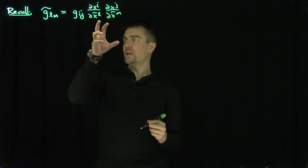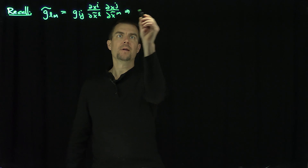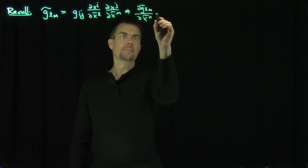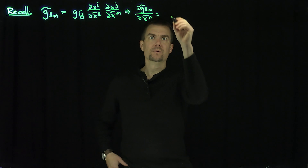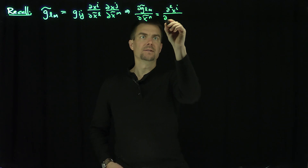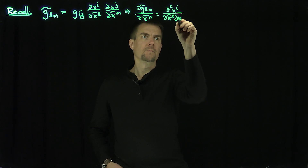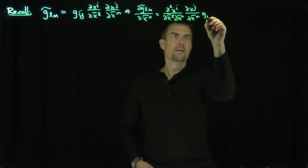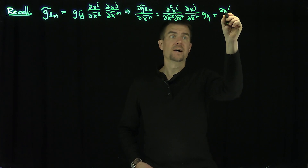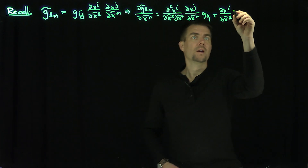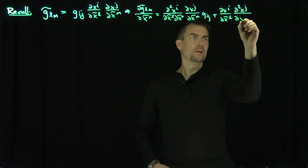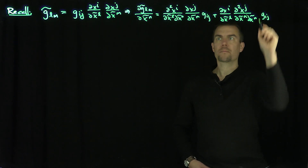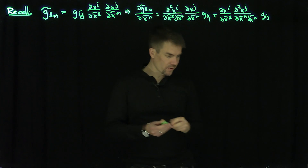What I'm going to do is differentiate this with respect to X̃^N. I'll get DG̃_LM/DX̃^N. It's going to be three distinct terms by the product rule. So it's going to be D²X^I/(DX̃^L DX̃^N) times DX^J/DX̃^M times G_IJ, plus DX^I/DX̃^L times D²X^J/(DX̃^M DX̃^N) times G_IJ.